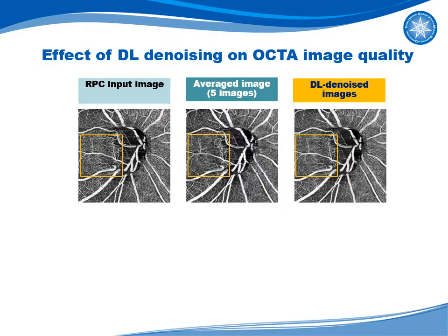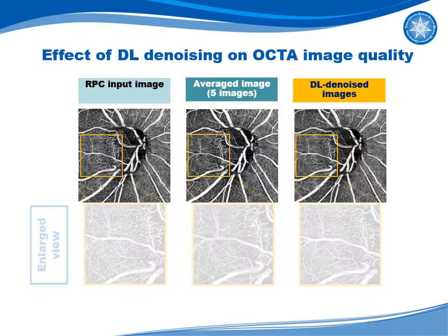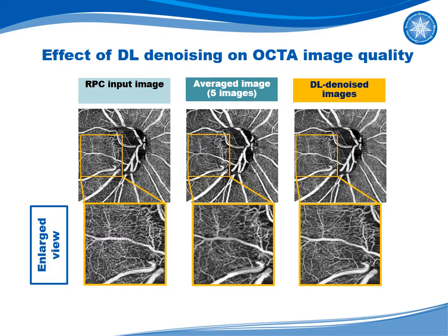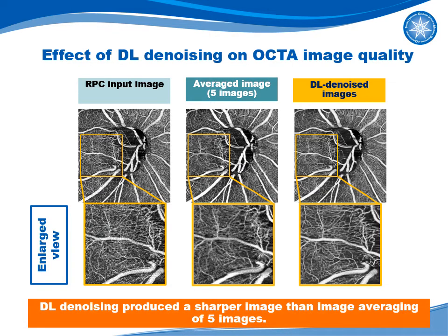This slide shows the effect of our deep learning denoising technique on OCTA image quality. The upper panel shows the wide view, and the lower panel shows the enlargement view. The left panel shows the input OCT image, the middle panel shows the average of five images, and the right panel shows the noise-reduced image from our single input image. The deep learning denoising result shows a sharper image than the averaged image.